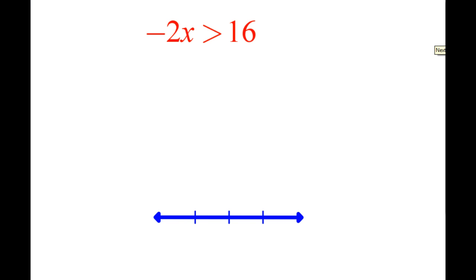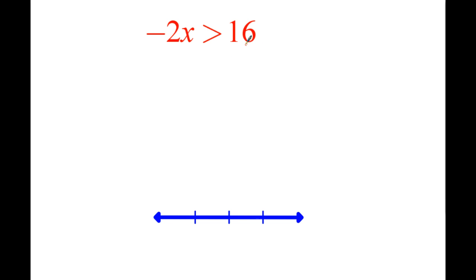Let's try another one. Now, if you notice, we have a negative in there. So this is where it's going to get a little bit funky. We do the same thing as before: negative 2 times x. So when I do this, I'm saying negative 2 times the number is greater than 16. Now these are inequalities, so we're saying one side is bigger than the other. We have to be careful about when we have this negative in here.